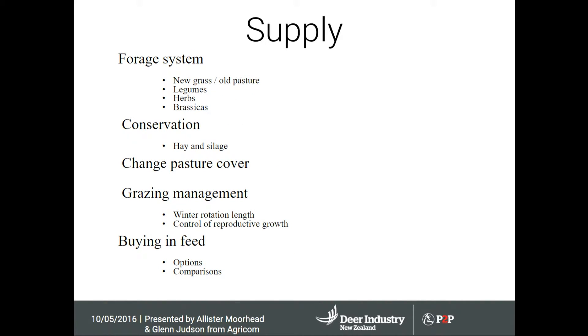When you look at supply, it's stuff you're already doing now. Many of you have utilised the species we're talking about — maybe not in some of the ways we're discussing today, but you've used them. They're not new. There's very little new on this list, apart from possibly the introduction or reintroduction of fodder beet into the feed system. But we're looking at the role of new pastures and species choice.